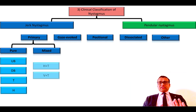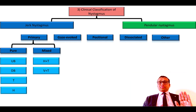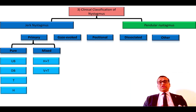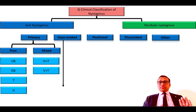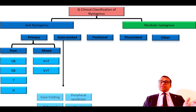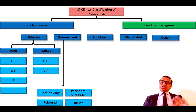The mixed type of primary jerk nystagmus could be a combination of horizontal with torsional, or vertical with torsional. Vertical with torsional can be upbeating torsional or downbeating torsional. The second variety of jerk nystagmus is gaze evoked, which could be gaze holding nystagmus, peripheral vestibular nystagmus, rebound nystagmus, or Bruns nystagmus.